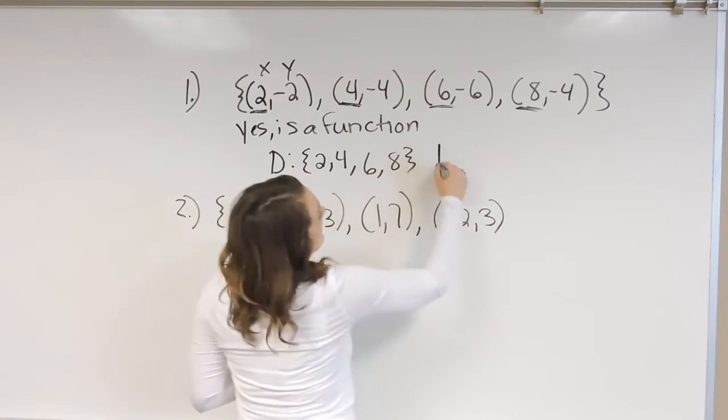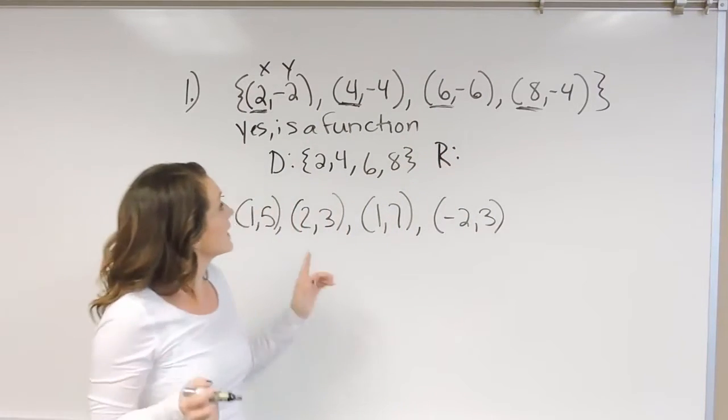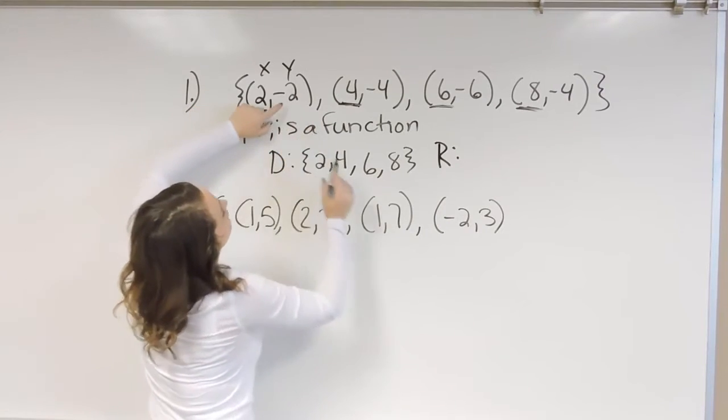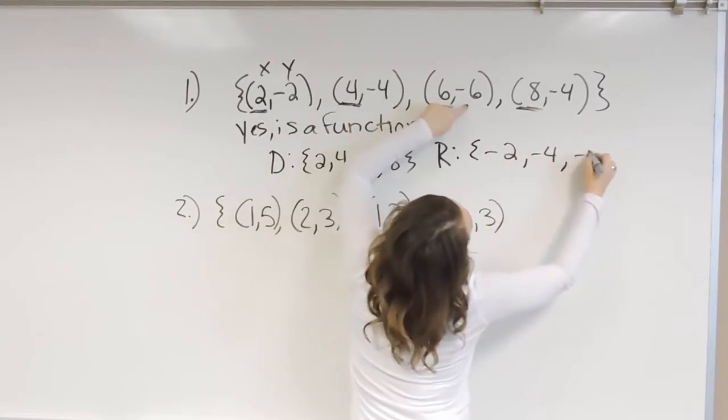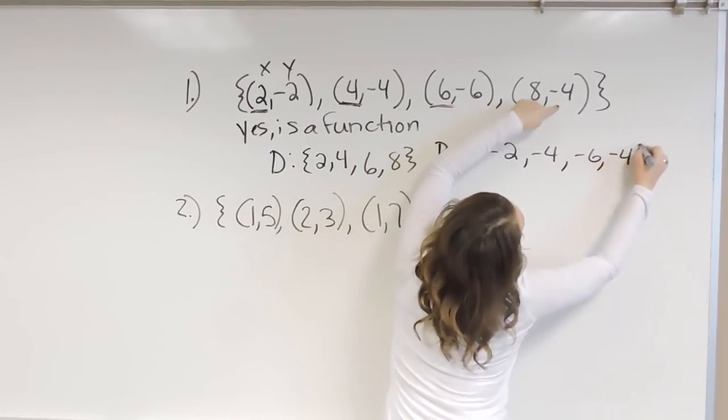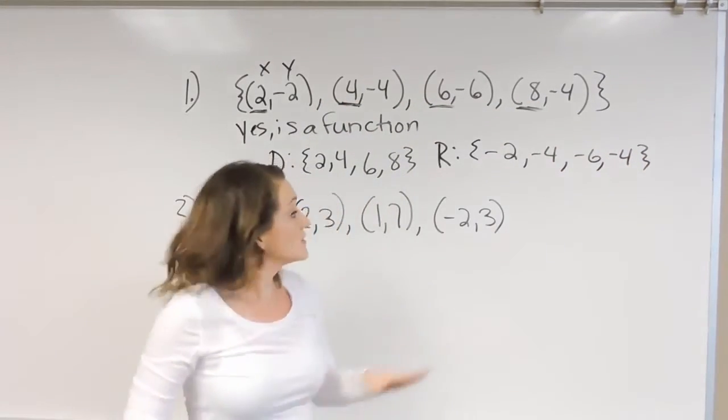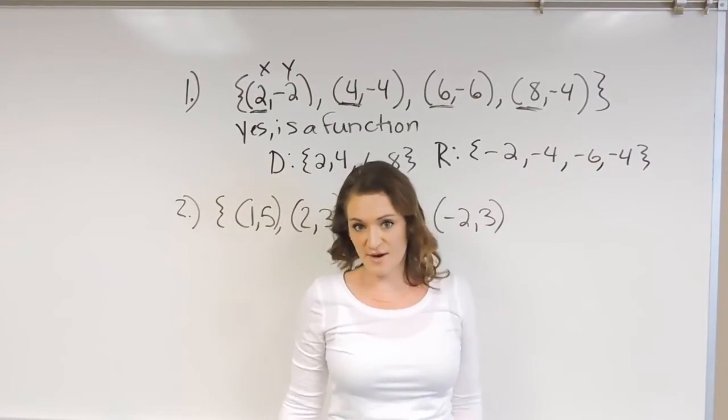For the range, that means that we're just going to look at our Y values. So for our Y values, we have a negative 2, a negative 4, a negative 6, and a negative 4. So that is our range there.